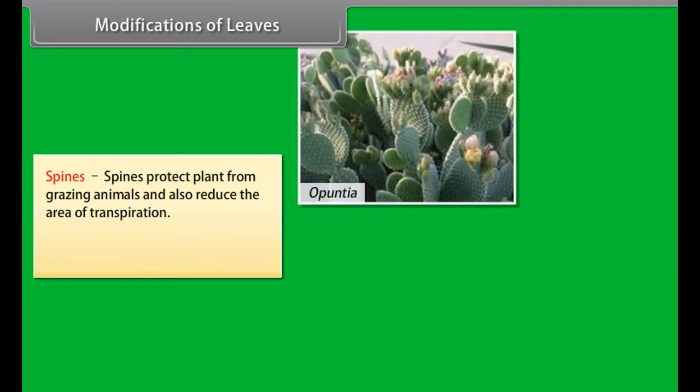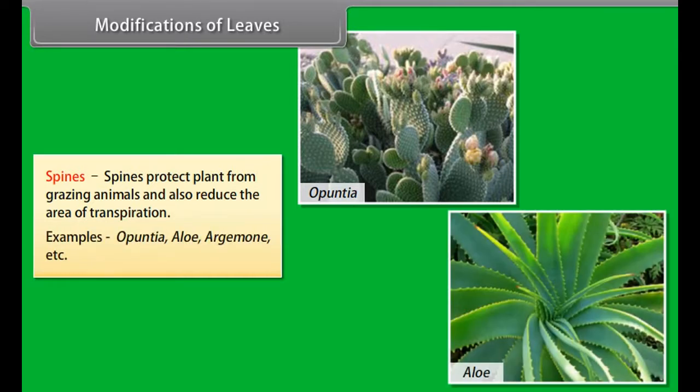Modifications of leaves: Leaves are modified to perform functions other than photosynthesis. It is of the following types: tendril, spines, and food storage.